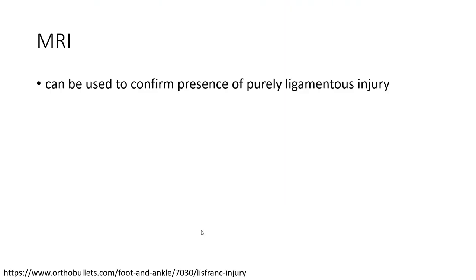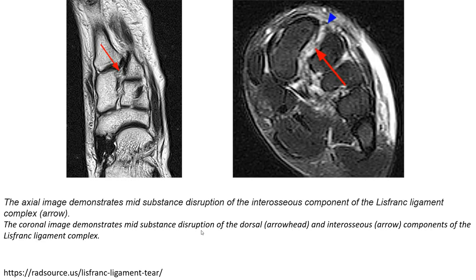MRI can be used to confirm the presence of a truly ligamentous injury. The axial MRI image demonstrates mid-substance disruption of the interosseous component of Lisfranc's ligament complex. Another axial image demonstrates mid-substance disruption of both the dorsal and interosseous components of Lisfranc's ligament complex.